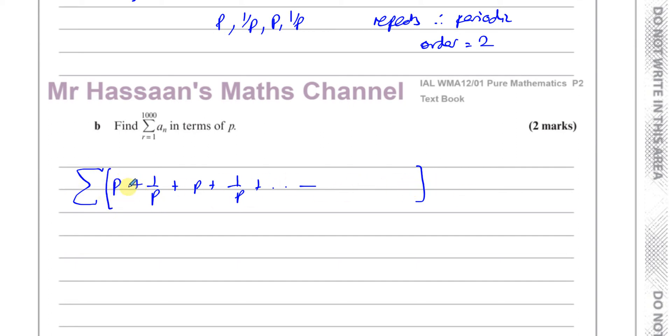Of course, if you have a thousand terms and there's p's and 1/p's only, you're going to have 500 p's and you're going to have 500 1/p's. So basically you can leave your answer like this: 500p + 500/p.